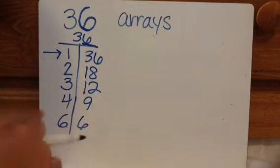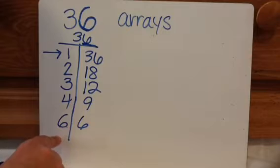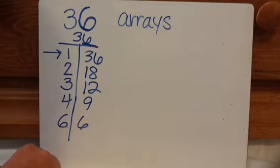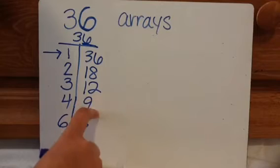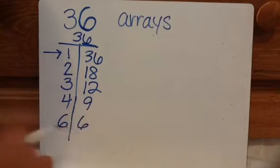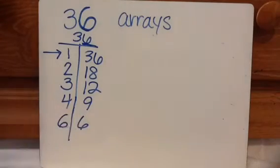Now I'm going to go to eight: eight, sixteen, twenty-four, thirty-two, forty — eight doesn't work either. Nine — oh look, nine is already on the right side, which means that's a stopping point. These are all the factors of thirty-six.